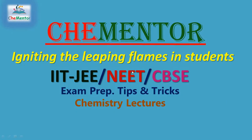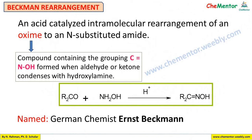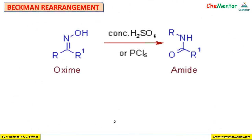Hello students. Today in this video I'll be talking about one of the name reactions in organic chemistry — the Beckmann rearrangement. Beckmann rearrangement is an acid-catalyzed intramolecular rearrangement of an oxime to an unsubstituted amide. An oxime is a compound which contains the grouping C=NOH, formed by the reaction between an aldehyde or ketone with hydroxylamine in the presence of acid.